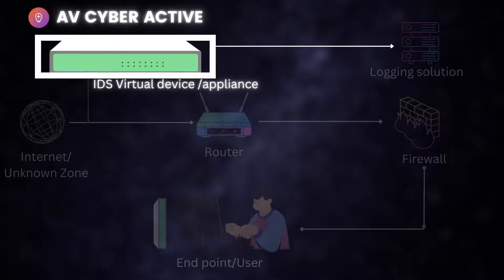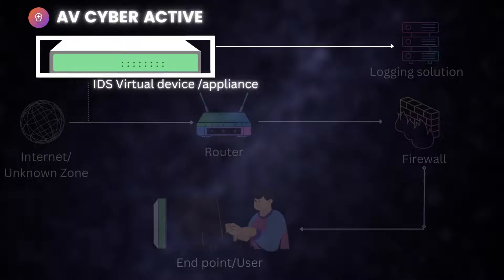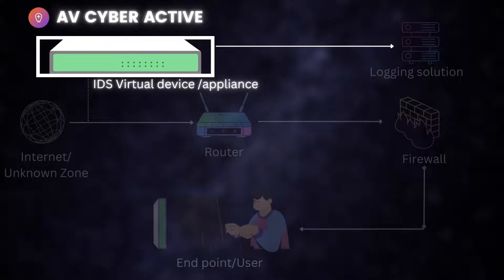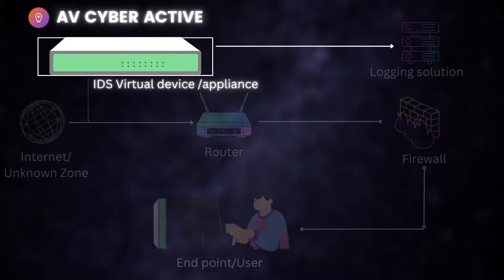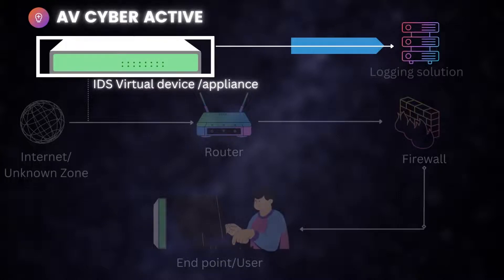What you should understand from this diagram is that the Intrusion Detection device doesn't do anything in the network apart from sniffing on a span port, sniffing all the traffic where it's placed. All the logs come into the Intrusion Detection device and then it logs to a logging solution or sends its threat intel to a different environment. That is basically IDS.